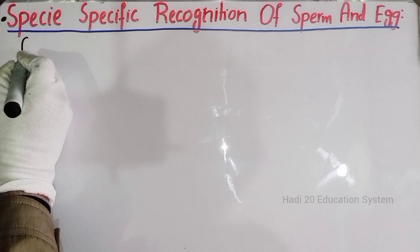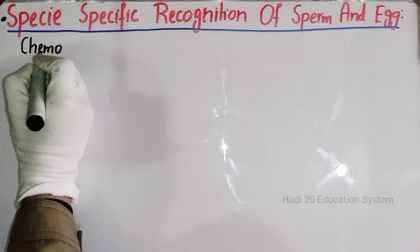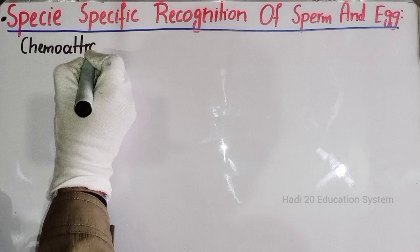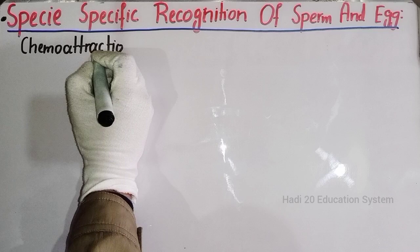Dear friends, which step is chemo-attraction? This is chemo-attraction. This is the egg, this is the egg cell membrane, and this is the jelly layer.